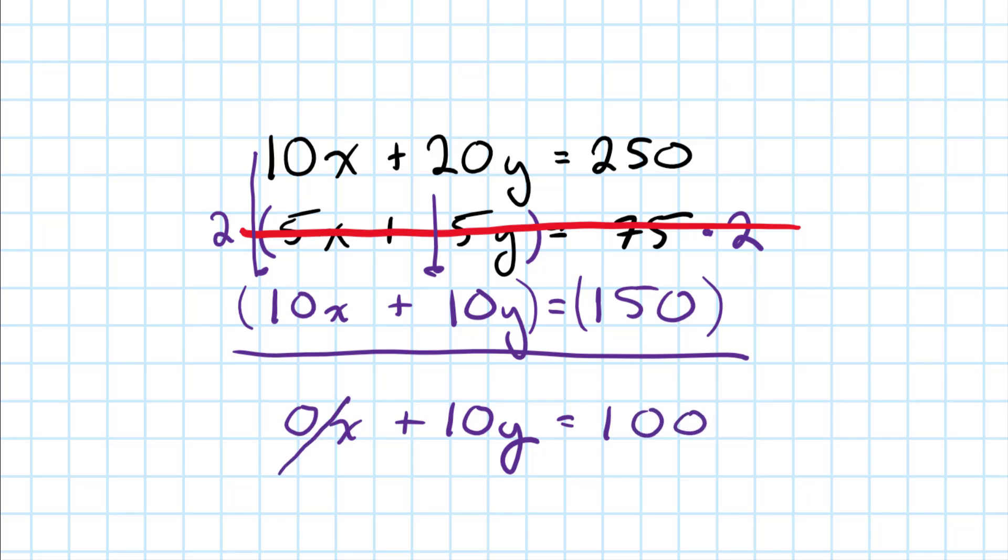The 0X is gone because that's 0. So 10Y equals 100. If we divide both sides by 10, then we get Y is equal to 10.